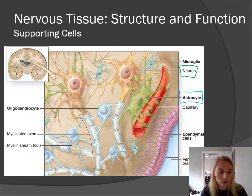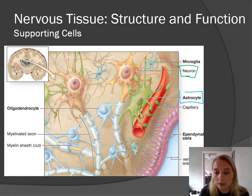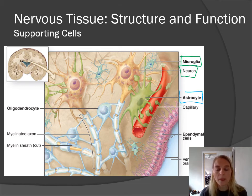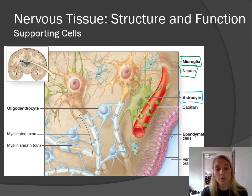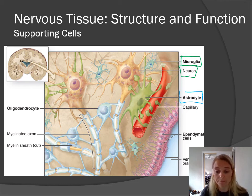The next on the list are microglia — the little light blue cells that look kind of pokey. Microglia, you can think of as the cleanup crew, the recyclers, the phagocytes. They are responsible for roaming around and cleaning up any cell debris or waste products that are building up in the brain.